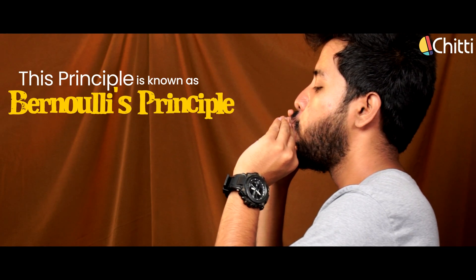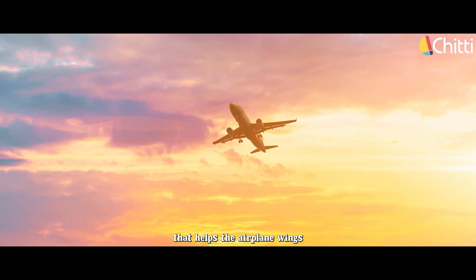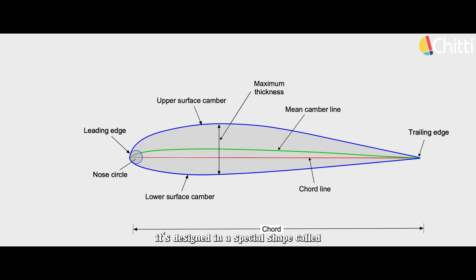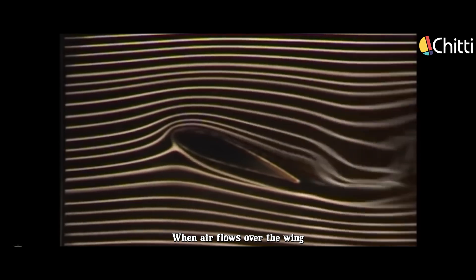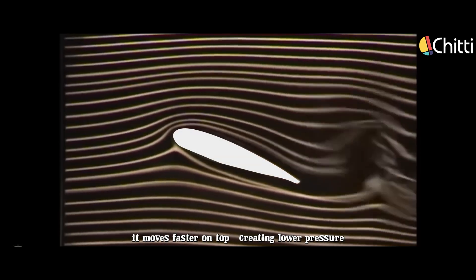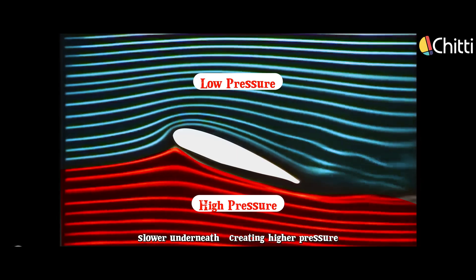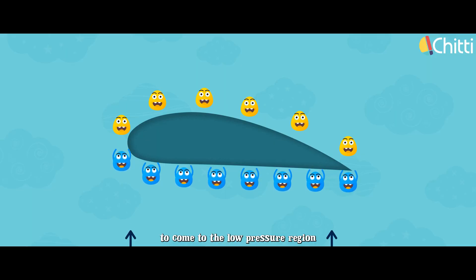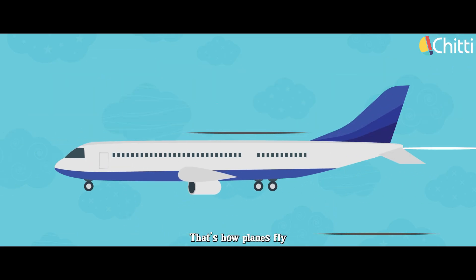This principle is known as Bernoulli's principle. This is the same principle that helps airplane wings generate lift. When you look at an airplane wing from the side, it's designed in a special shape called an airfoil. When air flows over the wing, it moves faster on top creating lower pressure, and slower underneath creating higher pressure. The higher pressure below pushes the wings upward — this is called lift. That's how planes fly.